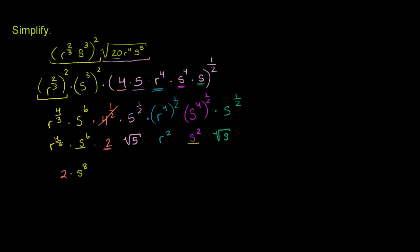Now there are two ways we could finish this. We could merge all the exponents: 2 times s to the 8th times s to the 1/2 gives s to the 8.5, times r to the 3 and 1/3, times the square root of 5. Or, if we don't want fractional exponents, we could write r to the 3rd times the cube root of r — since r to the 1/3 is the same as the cube root of r — and then times the square root of 5s, since both 5 and s are being raised to the 1/2 power.